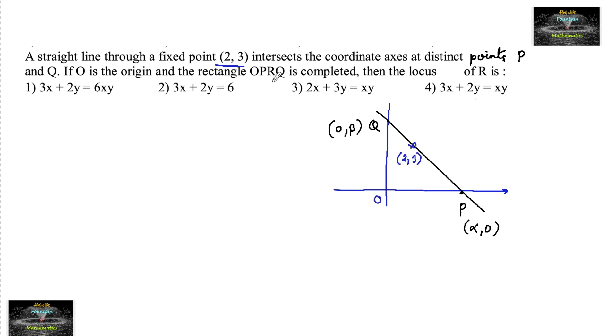O is the origin. If O is the origin and the rectangle OPRQ is completed, OPRQ is completed. So R can be, let us take the point is here. So that we can say this is OPRQ, a rectangle.